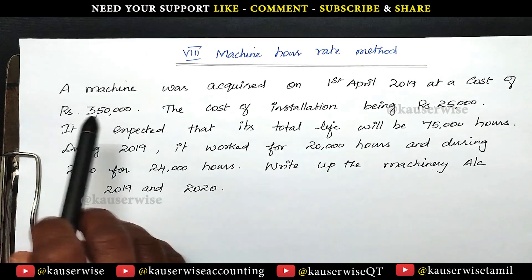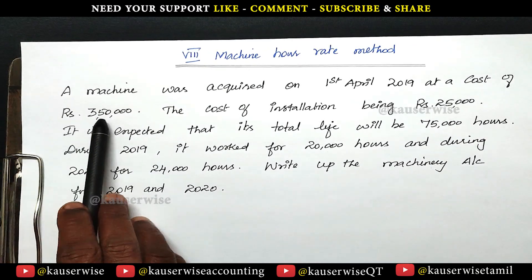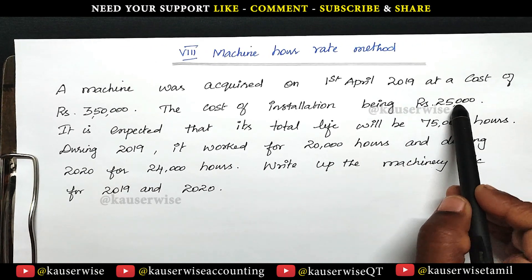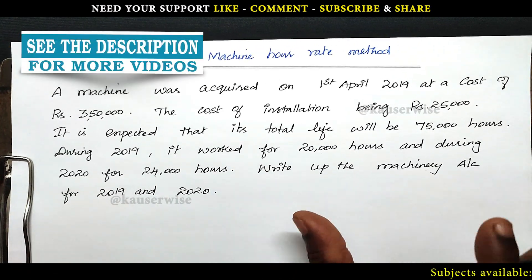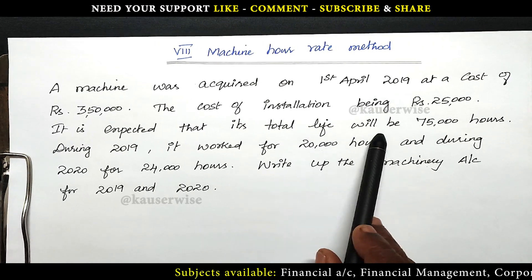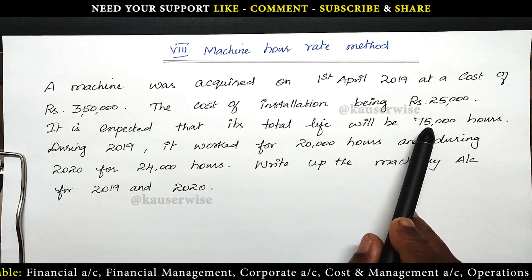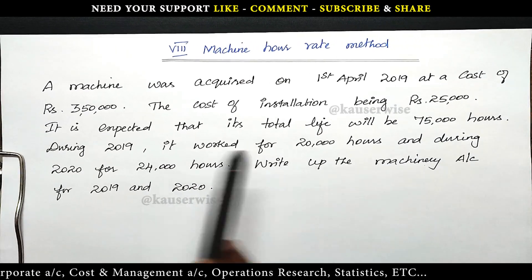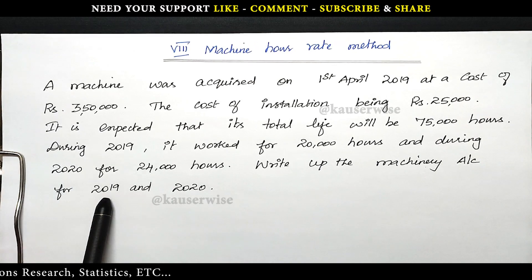See the problem — Machine Hour Rate Method. A machine was acquired on 1st April 2019 at a cost of Rs 3,50,000. The cost of installation being Rs 25,000. Any installation charges need to be added along with the cost to find out the total cost of the asset. So according to this problem the total cost of the machine is Rs 3,75,000. Its estimated total life is 75,000 hours. During 2019 it worked for 20,000 hours and during 2020 for 24,000 hours. Write up the machinery account for 2019 and 2020.